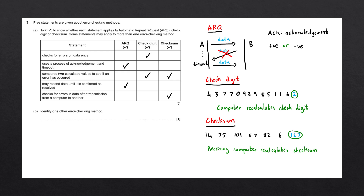Question B says: identify one other error checking method. Here we could mention a parity check, a method covered in a previous video. And there we go — that is our completed question.